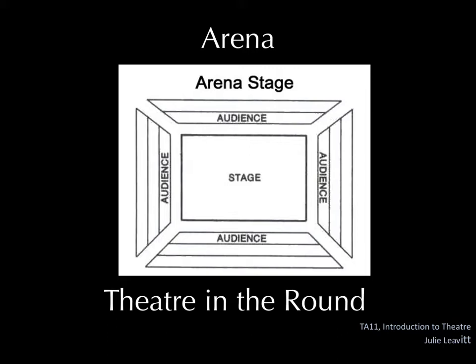So let's start with the arena space, which is also sometimes called theater in the round, which is kind of cute because this photo image I have here is actually of a rectangle, but it doesn't matter. An arena space or theater in the round is when the performance space is surrounded by audience on all sides. So if your performance space is a rectangle or a square, that means audience on all four sides. If it's a circle, that means audience all the way around.